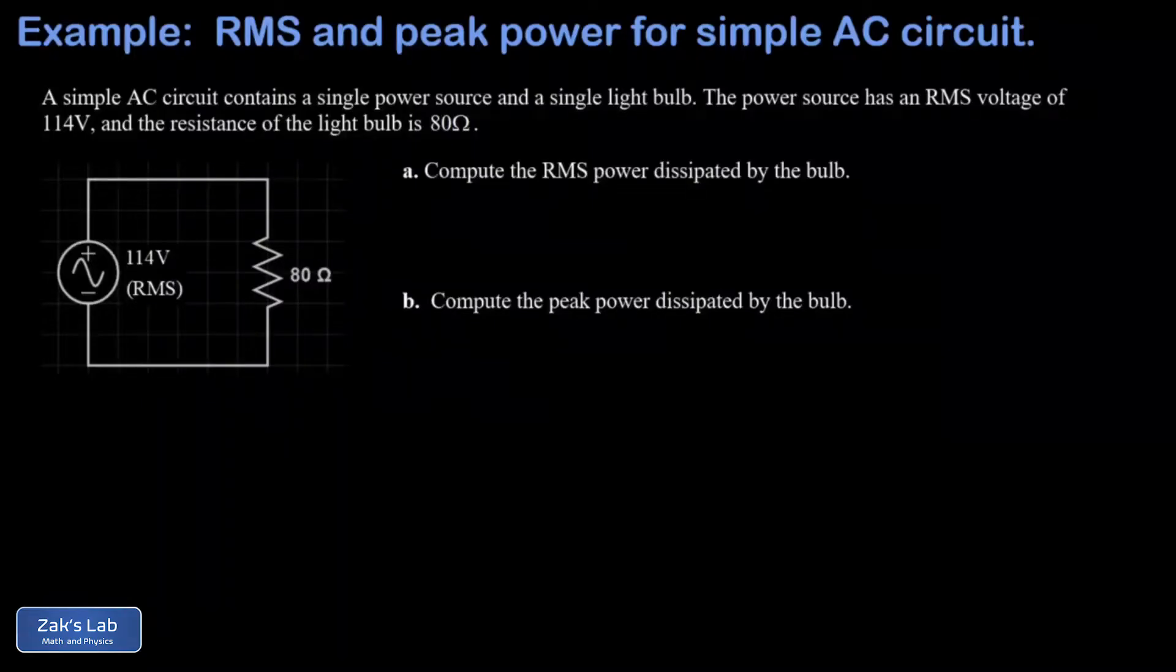In this video, we're looking at a simple alternating current circuit. I'm told that I have a 114 volt RMS AC power source, and that RMS is the type of averaging that we use for alternating current. We're given the resistance of a single light bulb of 80 ohms.